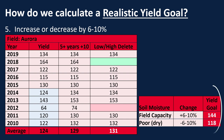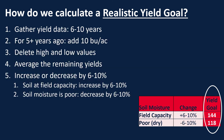Depending on the situation, we get one of two answers: if we increase it, our yield goal is 144 bushels per acre; if we lower it, it's 118. The number you choose between six and ten percent is up to you. So looking at these five steps: first, gather that yield data; second, for years five-plus years ago, add ten bushels per acre; third, delete the high and low values; fourth, average the remaining yields; and fifth, increase or decrease by six to ten percent. You can default to increasing by six percent, or alter it based on your soil moisture at planting.